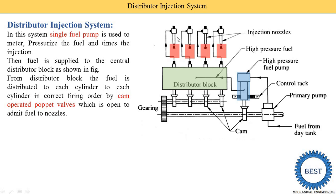In a common rail injection system, one pump is used. In an individual pump system, a different pump is used for each cylinder. In the distributor injection system, only one pump is used.